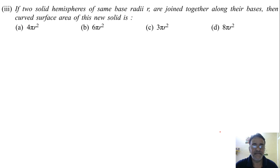So third bit. If two solid hemispheres of same base radii r are joined together along their bases then what is the curved surface area of the new solid? 4 pi r square. Very good. 4 pi r square.